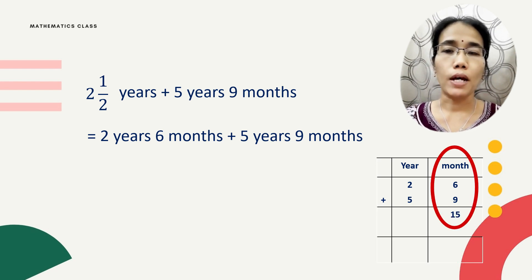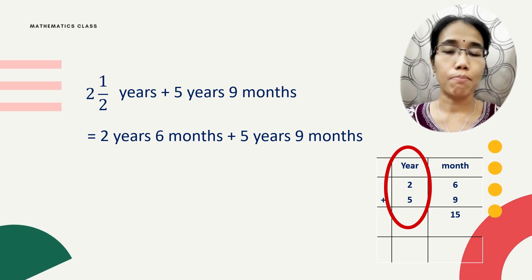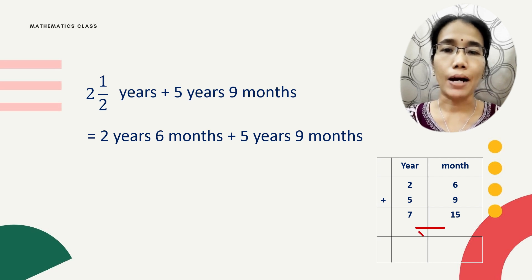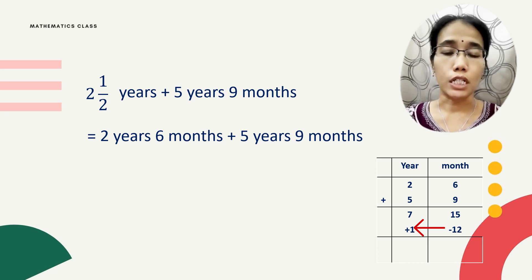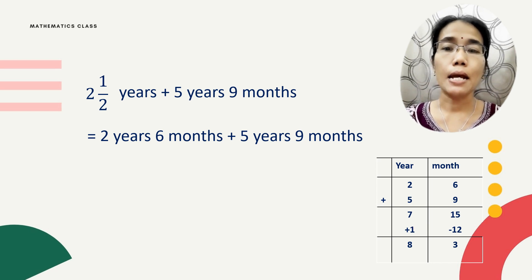Six plus nine gives you 15, and two plus five gives you seven. Now we have 15 months, but in a year we only have 12 months. So take out 12 from 15 — 15 minus 12 gives you 3. Add the 12 months to years: 12 months is one year, so add one to the year. Now we get eight years and three months.